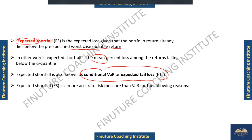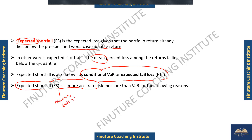Expected Shortfall is the Conditional VaR given that the loss has exceeded your VaR model value. It is more accurate than VaR because VaR does not talk about the magnitude of losses beyond the threshold. These are the key points highlighted.